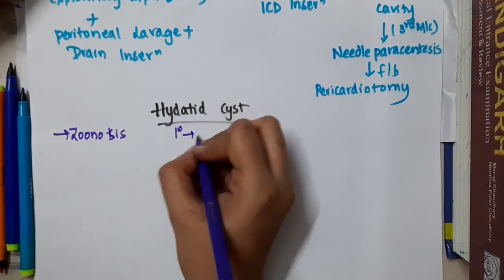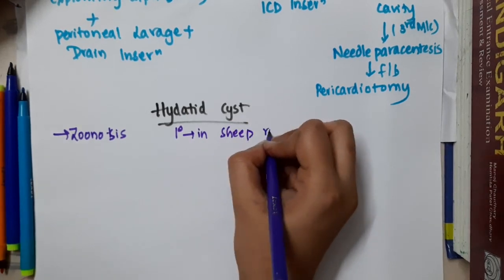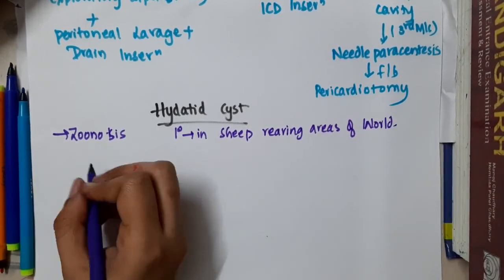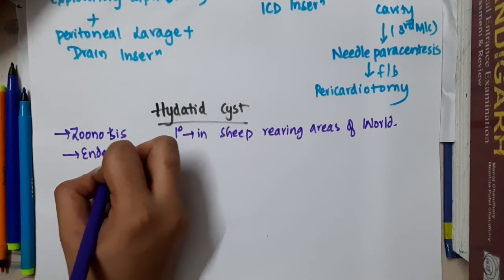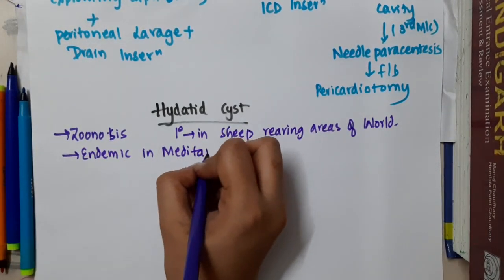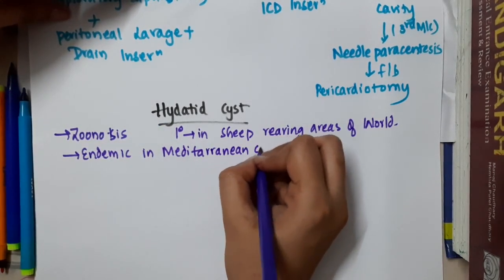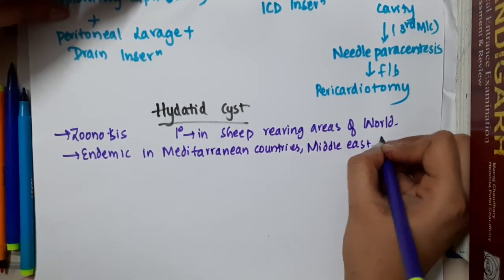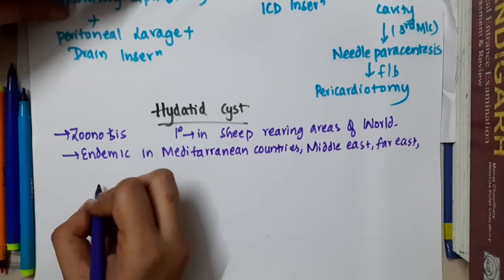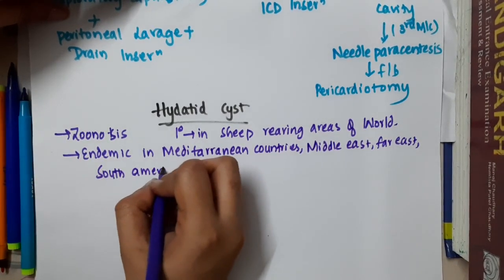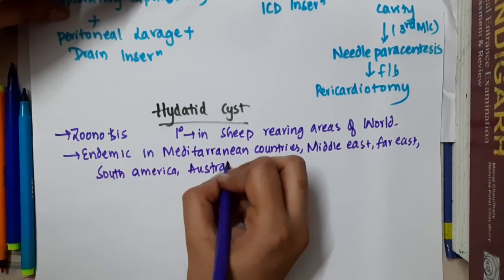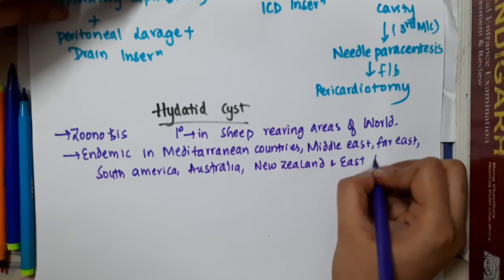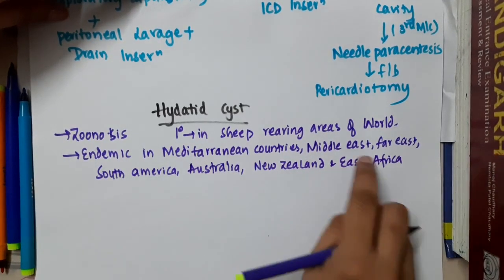Hydatid disease is a zoonosis and primarily it is seen in sheep rearing areas of the world. It is endemic in Mediterranean countries, Middle East, Far East, and South America.